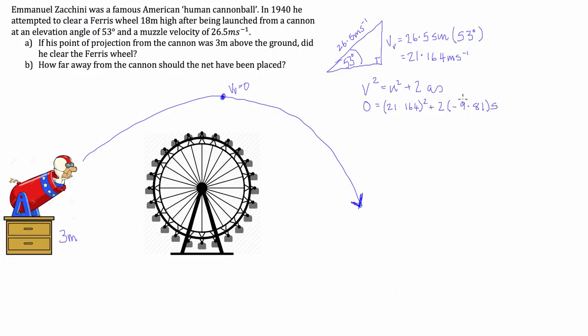We can rearrange this, so s is going to equal 21.164 squared divided by 2 times 9.81, and that equals 22.829 meters.